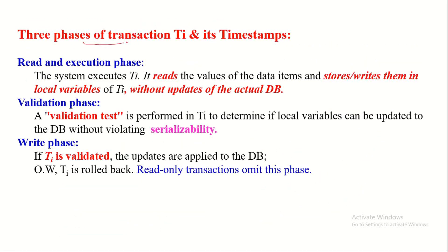Let us now discuss the three phases of transactions and their timestamps. In a validation based protocol, every transaction goes through three phases. The last phase is not applicable to read-only transactions, which we will discuss shortly. The three phases are: read and execution phase, validation phase, and write phase. During the read and execution phase, the system executes the transaction, reads the values of the data items, and stores them in local variables. During this phase, there are no updates made to the actual database.